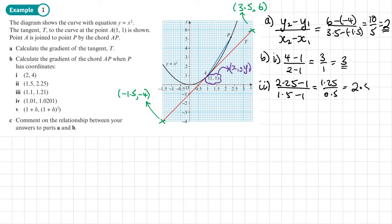Which is 5 over 2, which is 2.5. So now I get a gradient of 2.5. Let's move on to the third coordinate that we're given, which is (1.1, 1.21).